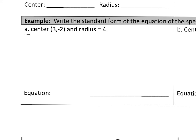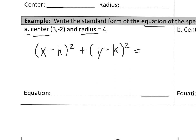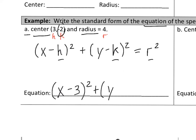Now let's write out the equation of a circle given the center and the radius. Recall the equation: x minus h squared plus y minus k squared equals r squared. My radius is 4, and the center gives me h and k. So the final equation is x minus 3 squared plus — since k is negative 2, it becomes y plus 2 squared — equals the radius squared, which is 16.